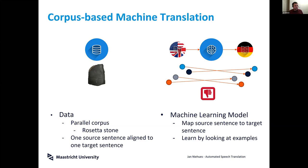One model could be, for example, to always map the leftmost point to the leftmost point and so on. As you see in the example, this would not be a good model because it doesn't correctly map the corresponding dots.